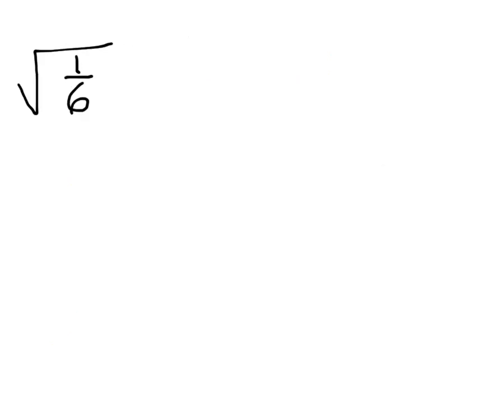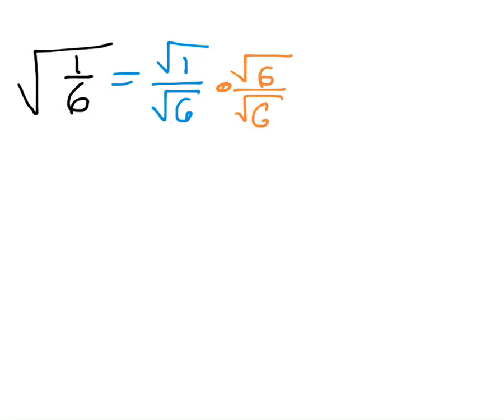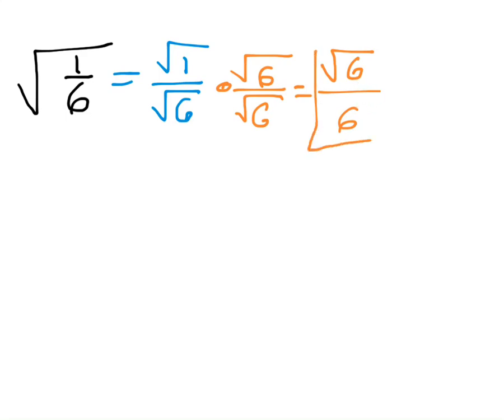Try this one: simplify the square root of 1 sixth. We have a rule that says for a division under the square root you can break it up into multiple square roots. We don't want square roots in the denominator, so we rationalize it — multiply by the denominator over itself. Multiplying the top two things together gives square root of 6; multiplying the bottom gives square root of 36, which is 6. Can I simplify square root of 6 any further? No — there's no perfect square that goes into 6, so this is the final answer: square root of 6 over 6.